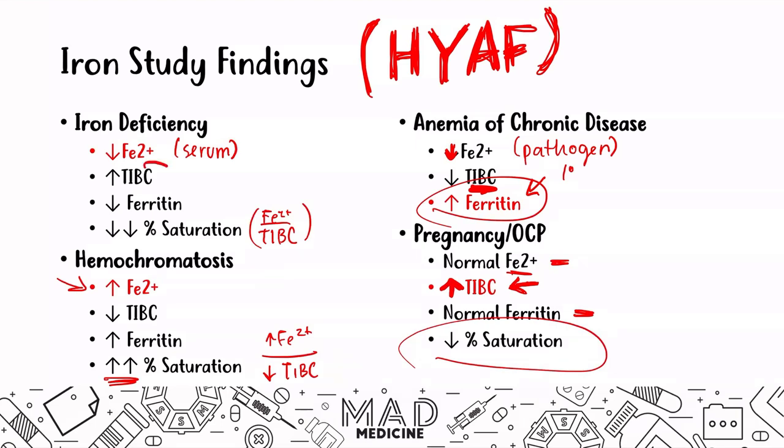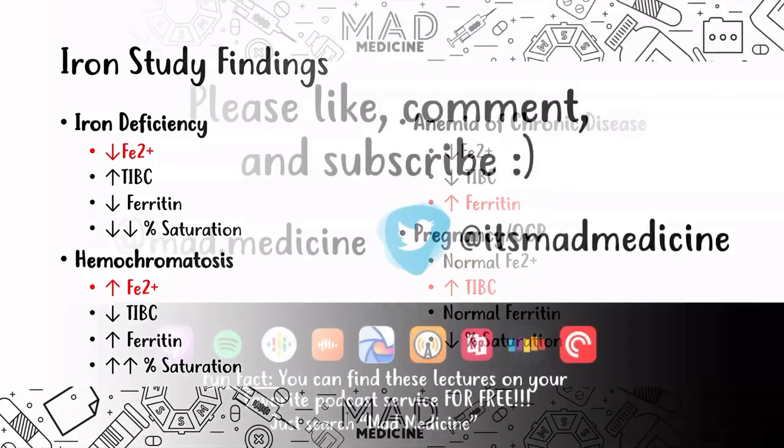To recap: iron deficiency anemia shows decreased iron, increased TIBC, decreased ferritin, and decreased percent saturation. Hemochromatosis is the complete opposite. Anemia of chronic disease features increased ferritin as the body competes against pathogens for iron, with decreased iron and decreased TIBC. In pregnancy and OCP use, everything is normal except for an elevated TIBC — it is not truly a pathogenic state.